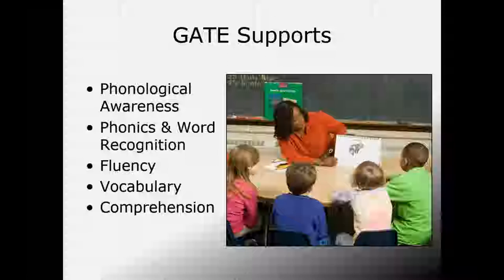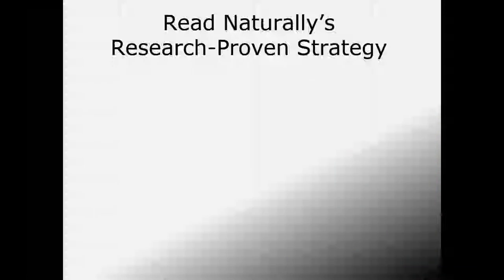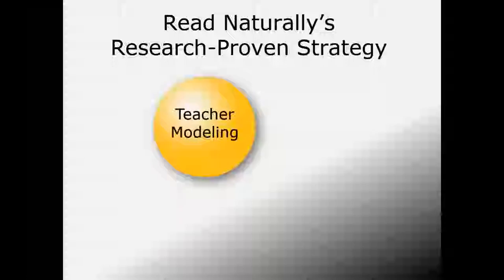The fluency component is achieved through three research-based strategies that make up the Read Naturally strategy. The first is teacher modeling, which occurs as students actively read along and mimic the teacher's phrasing and intonation. Teacher modeling teaches word recognition and allows students to work at a level they couldn't handle independently, because the teacher models the proper way to say words as well as the expression and intonation.